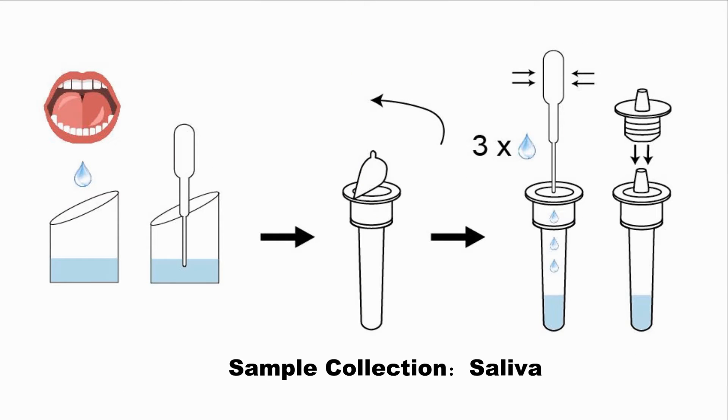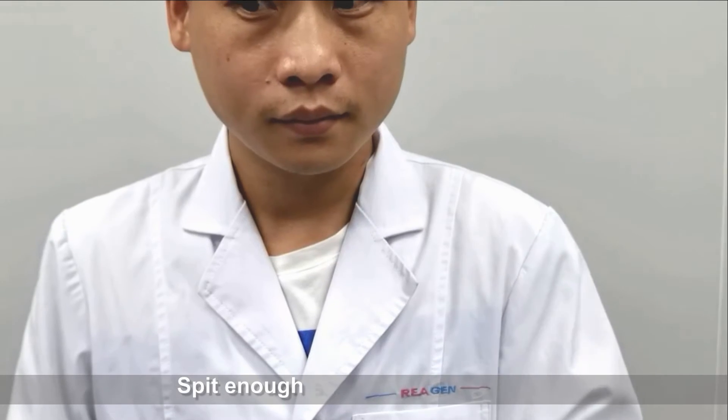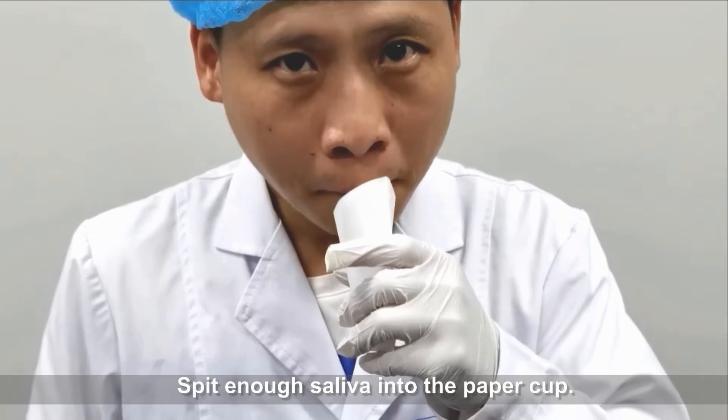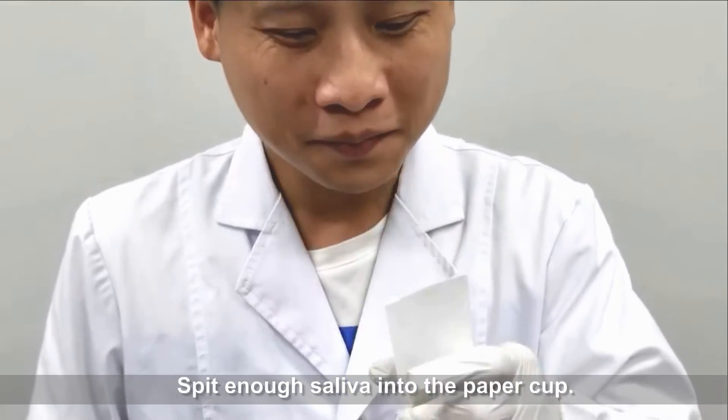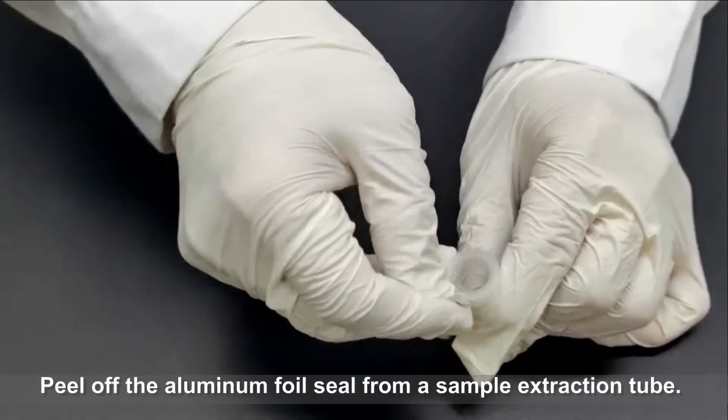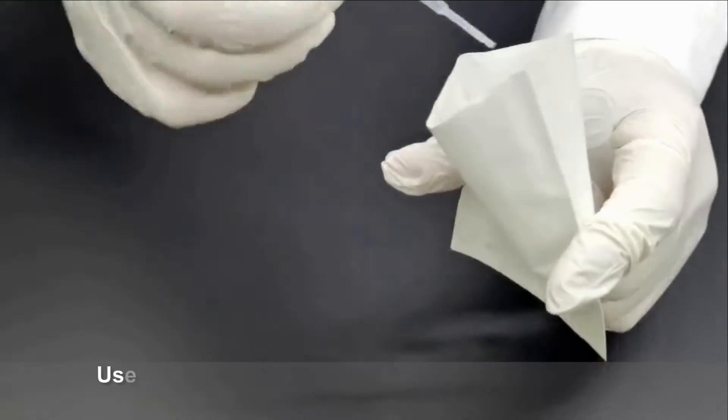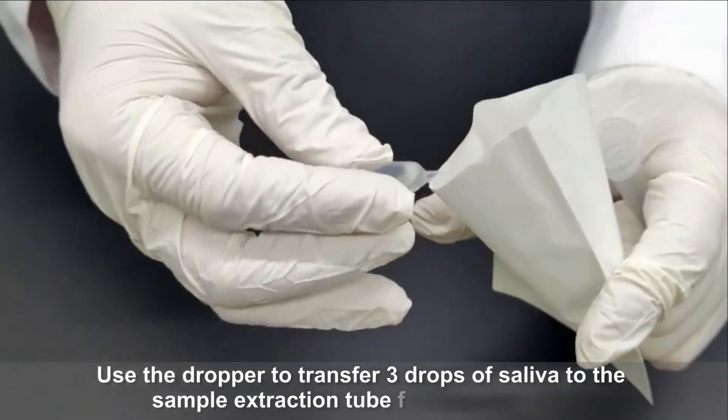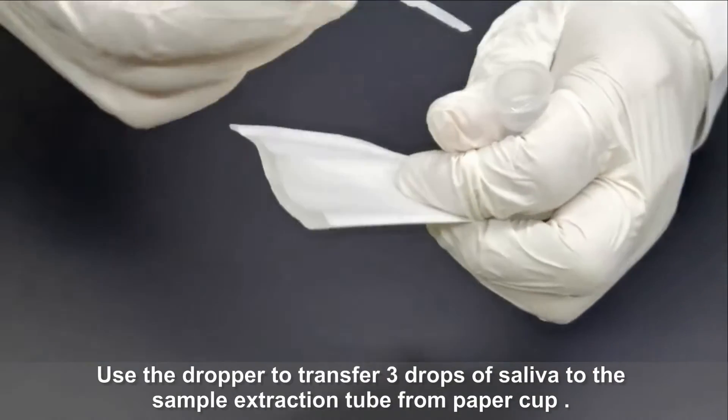Sample collection saliva: Spit enough saliva into the paper cup. Peel off the aluminum foil seal from a sample extraction tube. Use the dropper to transfer three drops of saliva to the sample extraction tube from paper cup.